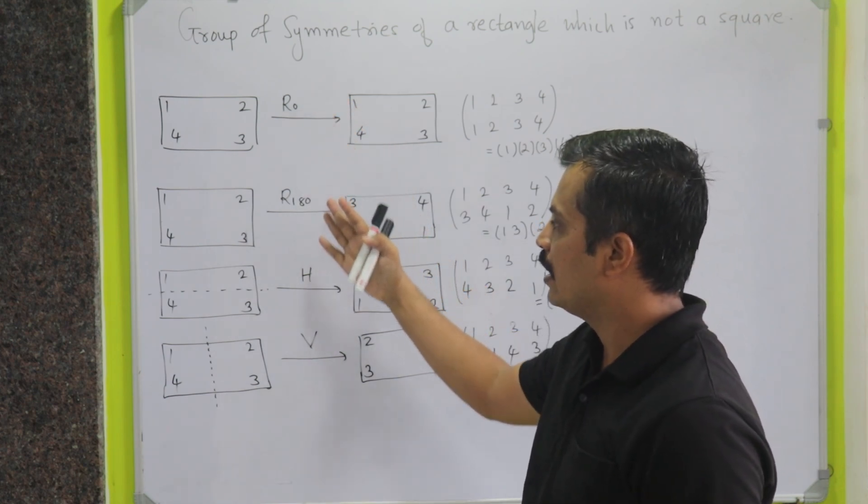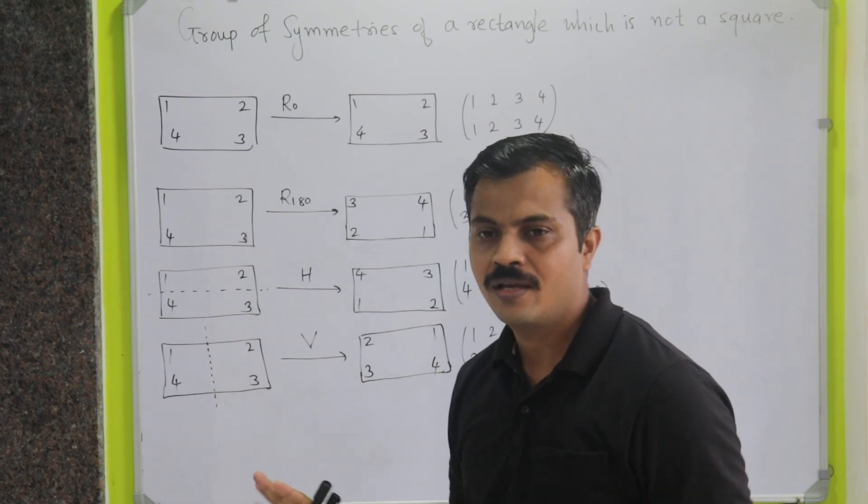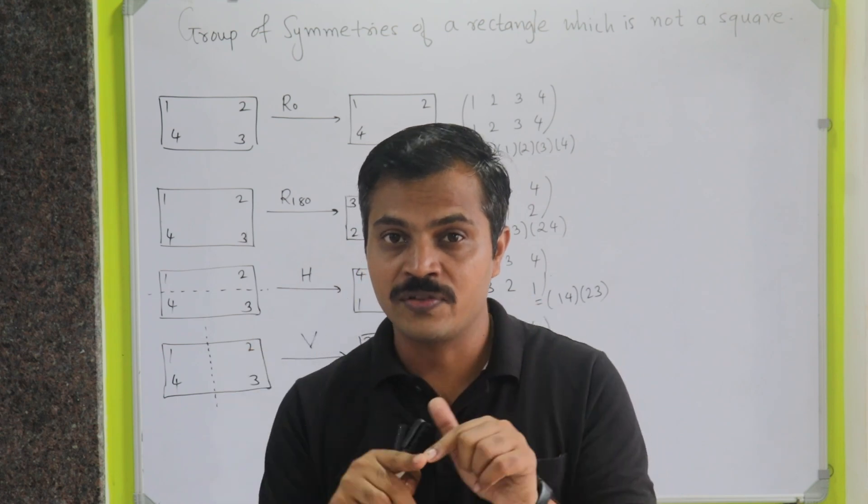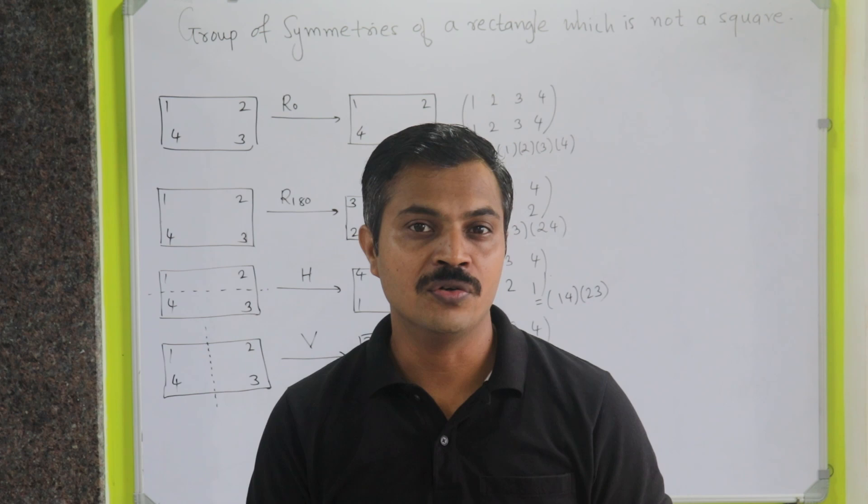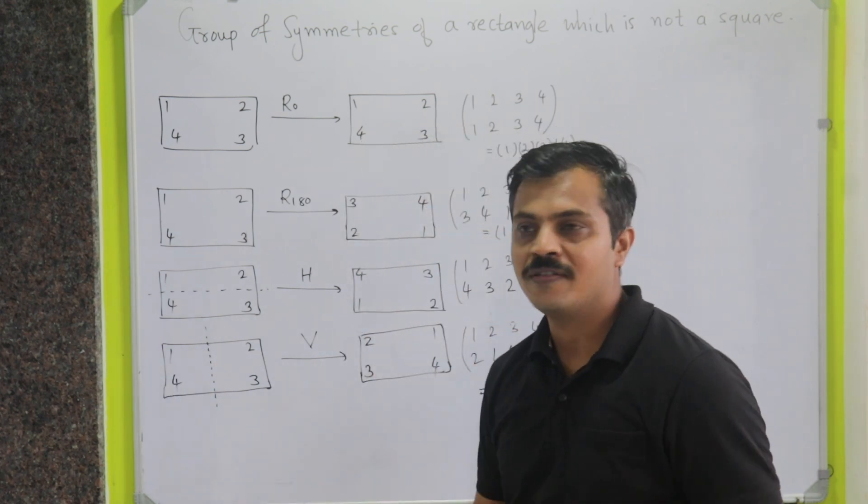So R0, R180, rotation about horizontal axis, rotation about vertical axis. We have already seen symmetries of a square. Just you can refer that video in order to better understand how we find the symmetries.